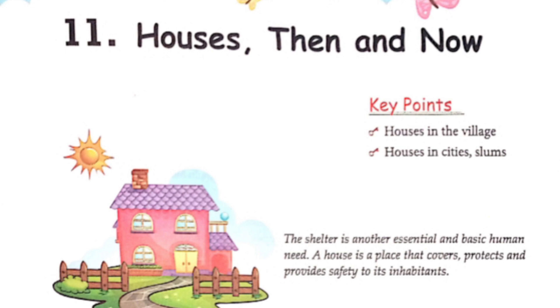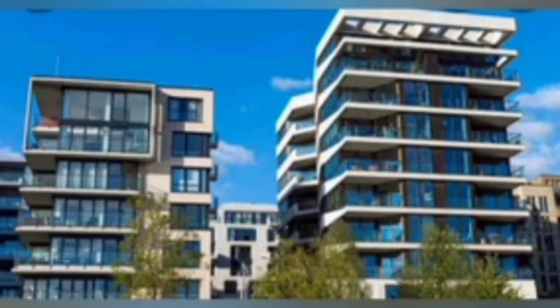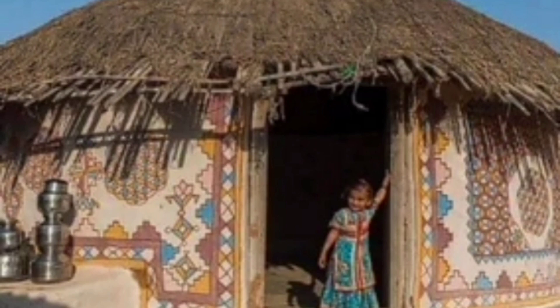Good morning students. Today we are going to understand Chapter 11, 'Houses Then and Now,' and based on our understanding we will do the book exercises and question and answer of this chapter. Children, we all live in different types of houses like bungalows and flats, which are strong and permanent houses, and also huts, mud houses, and stilt houses.